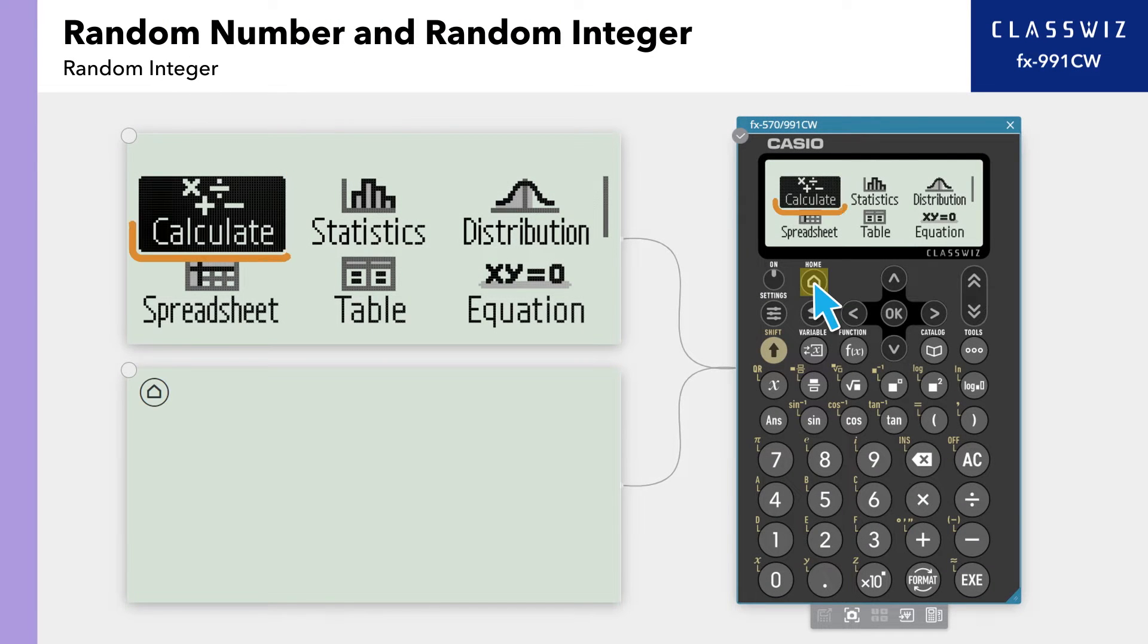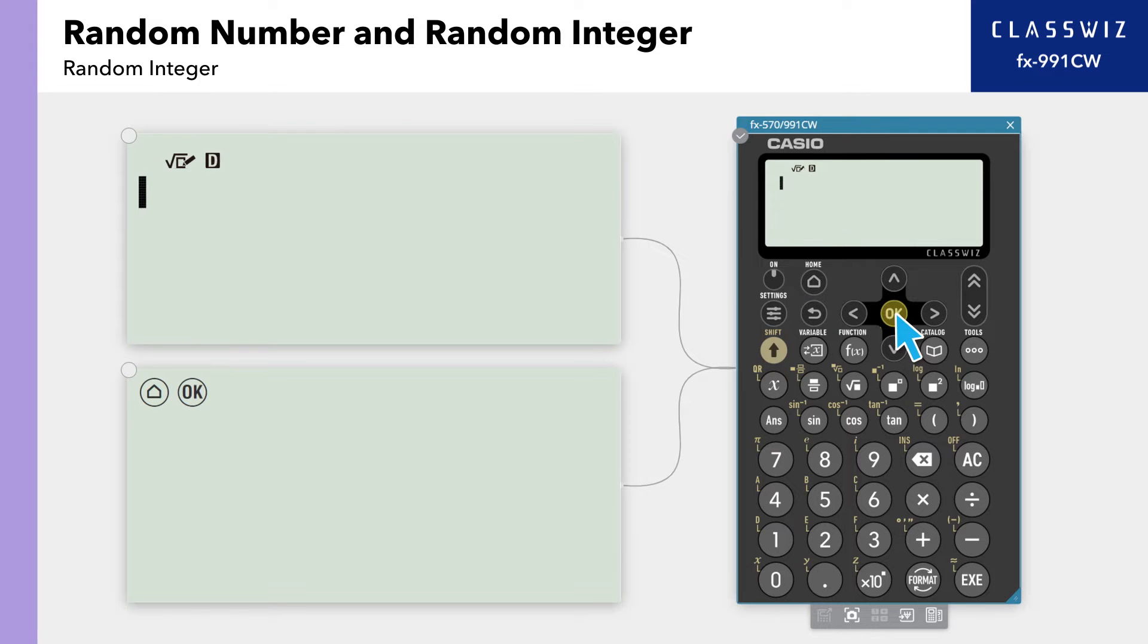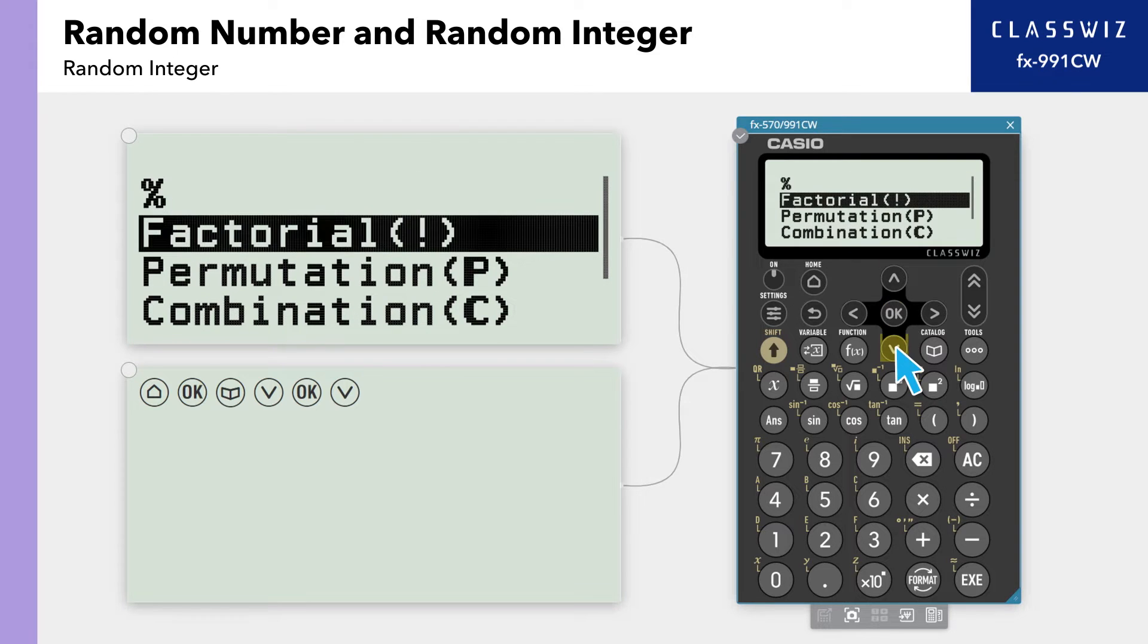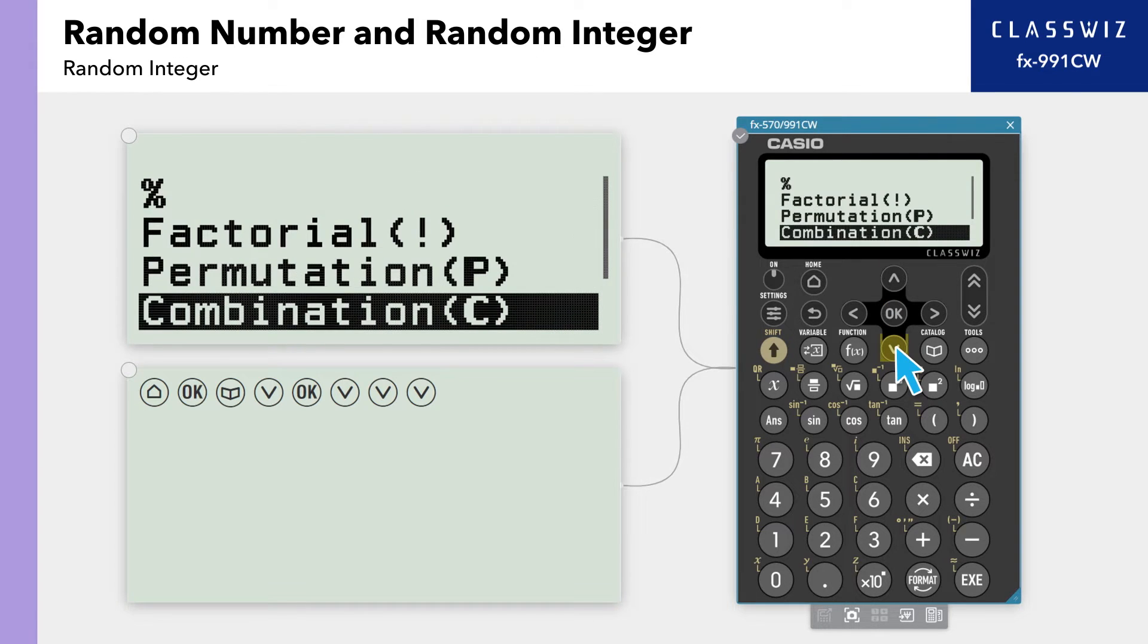Press Home, then select Calculate. Then, press Catalog and select Probability. Here, scroll down and select Random Integer.